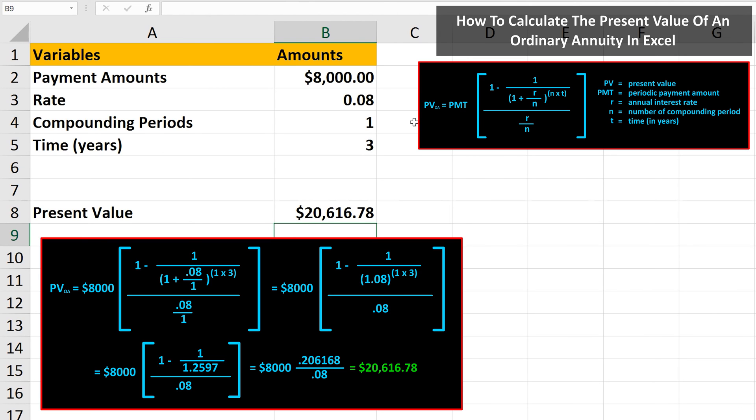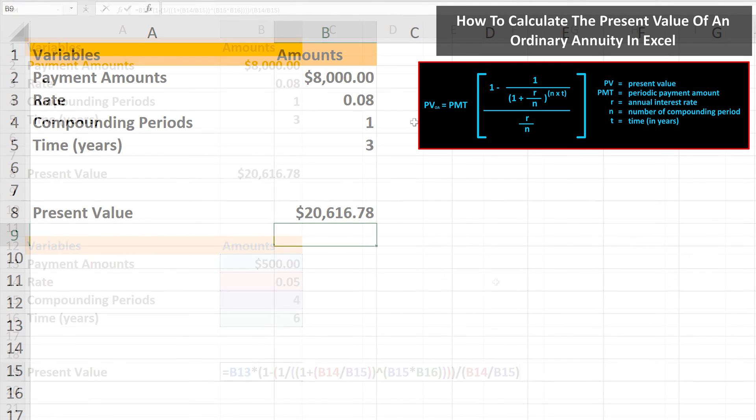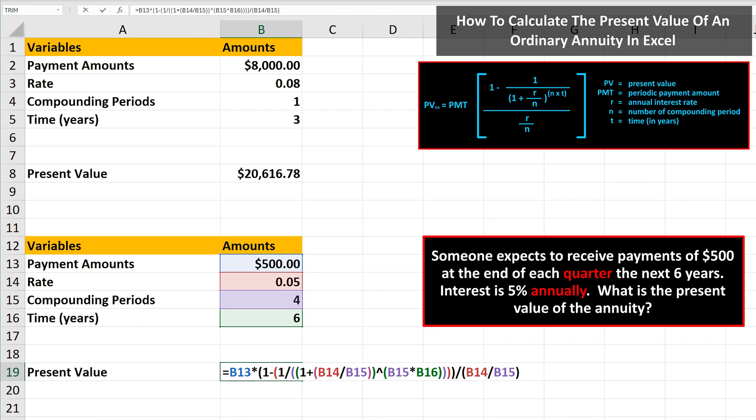And here is this problem written out by hand. You can see we do get the same answer. And here is another example where n, the number of compounding periods, is not 1. Here it is 4. And I'll hit the enter key, and we get $10,312.12 as the present value of the annuity.